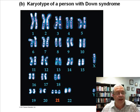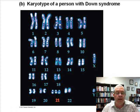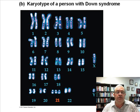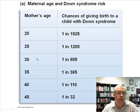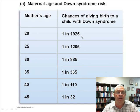Where did the extra chromosome 21 come from? It came in the egg cell or the sperm cell — most of the time in the egg cell, about 90% of the time, and about 10% of the time in the sperm cell. There's also a chart showing a correlation: as the mother's age increases, the chances of giving birth to a child with Down syndrome go up significantly — much higher for a 45-year-old mother than a 20-year-old.